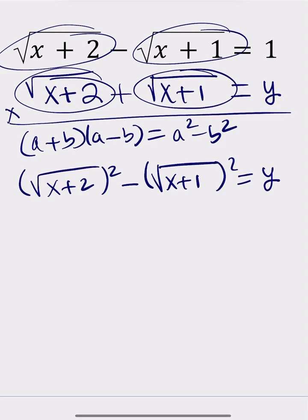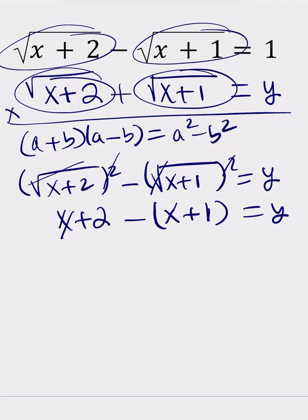When you square the radical, these two things cancel out or disappear, you end up with something super simple: x+2 - (x+1) = y. But that's just 1 because x is cancelled out, 2 minus 1, so y equals 1.